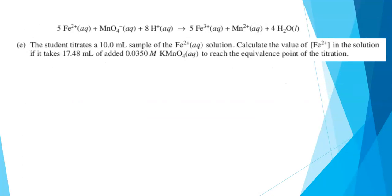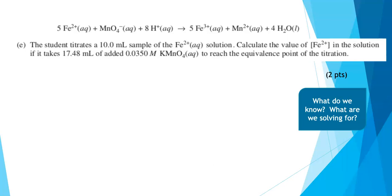The student then titrates a 10.0 milliliter sample of this iron 2 plus solution. Calculate the value of the iron 2 plus in the solution if it takes 17.48 milliliters of 0.0350 molar potassium permanganate to reach the equivalence point of the titration. So now we've got a really nice stoichiometry question, solution-based stoichiometry. It was worth two points, and we have to do a little bit of math here. Nothing we can't handle, but there are places where you have to really pay attention to what you're doing. I always encourage my students to think about what we know. We know the volume of the iron 2 plus solution. We know the volume of the potassium permanganate solution. We know the molarity of the potassium permanganate solution.